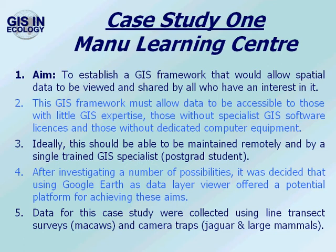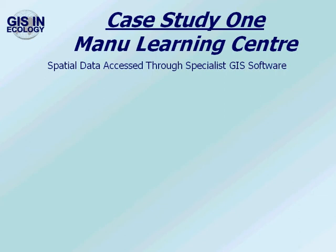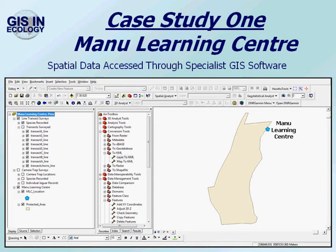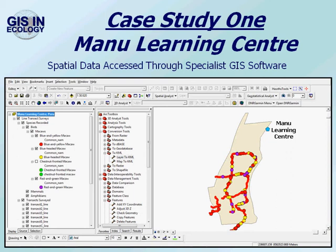To illustrate this, I'm going to use data collected along line transects, looking at the distribution of jaguars and other large mammals. If we first look at spatial data access through specialist GIS software — in this case ArcGIS — we've got the position of the Manu Learning Centre and the local protected area around it that lies within the wider Manu Biosphere Reserve. We've got data layers representing transect lines that have been surveyed, then locations of individual species. We can see from the table of contents window that the GIS project has been structured so that different data layers are grouped into a nested hierarchy, with data from individual species separated out into individual data layers. This allows a structure that is most easily translatable into Google Earth and most understandable for people using it.